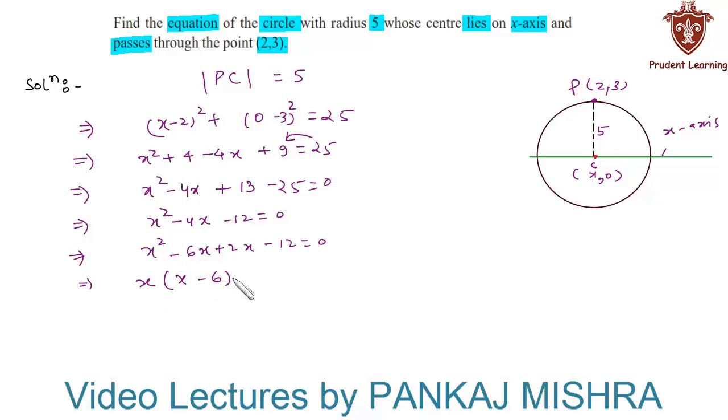Taking (x-6) common, here we have (x-6)(x+2) = 0. This implies that either x-6 = 0 or x+2 = 0. Hence, we have either x = 6 or x = -2.